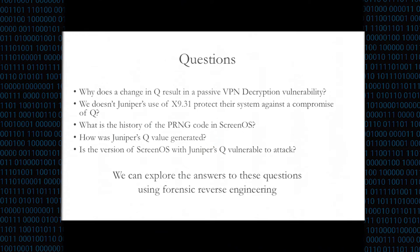This leads to a couple of questions. Why does just a change in Q result in passive VPN decryption as the CVE describes? If Juniper is using ANSI X9.31 and dual EC cascading as described, why doesn't ANSI protect them? We were also curious about the history of random number generation in ScreenOS: when was dual EC introduced, and how was Juniper's Q value generated? Was it generated safely so that no one knows the discrete log, or did Juniper know it? We explored the answers with forensic reverse engineering.